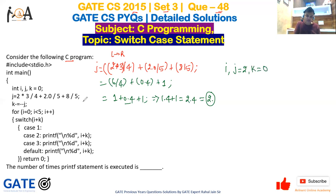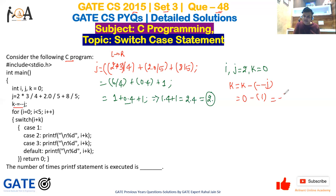Next, k minus-equals minus-minus j, which means k = k - (--j). This is pre-decrement, so j becomes 1 first, then k = 0 - 1 = -1. The updated value of j is 1 and the updated value of k is -1.